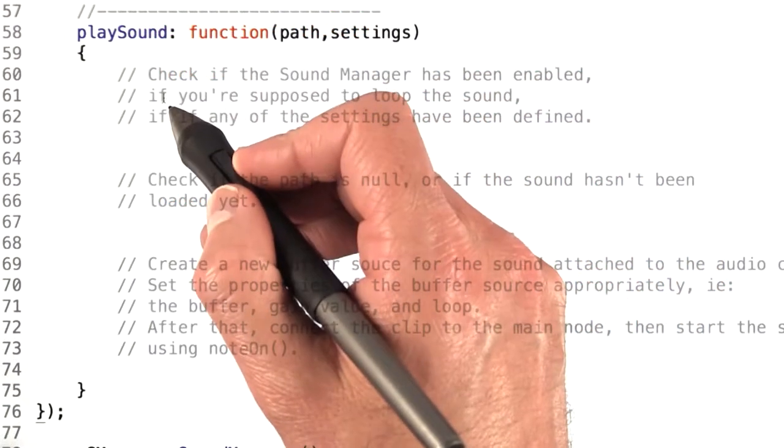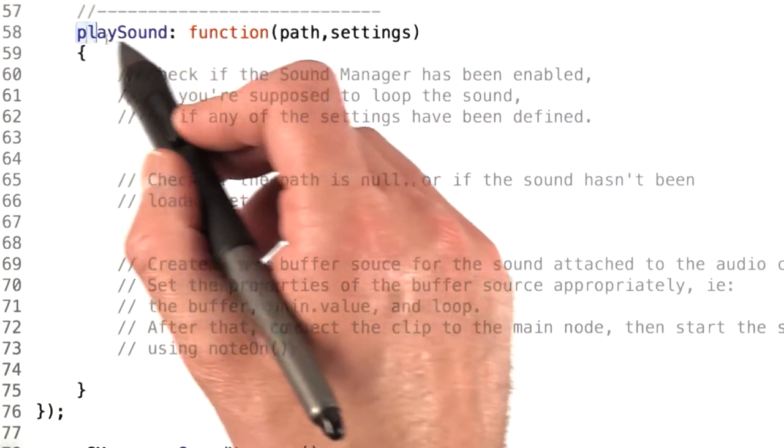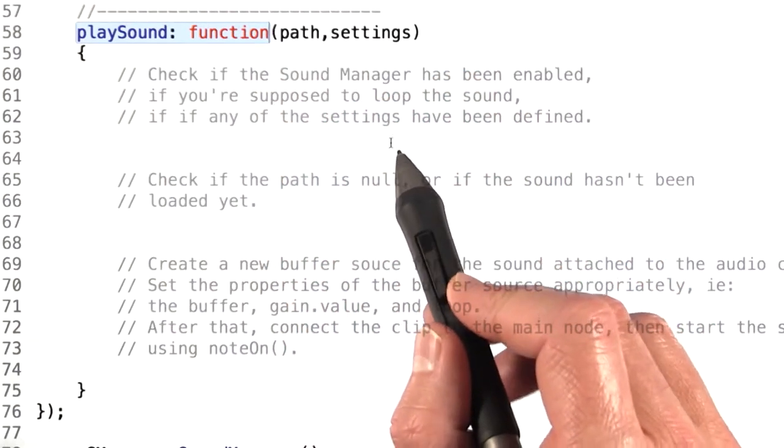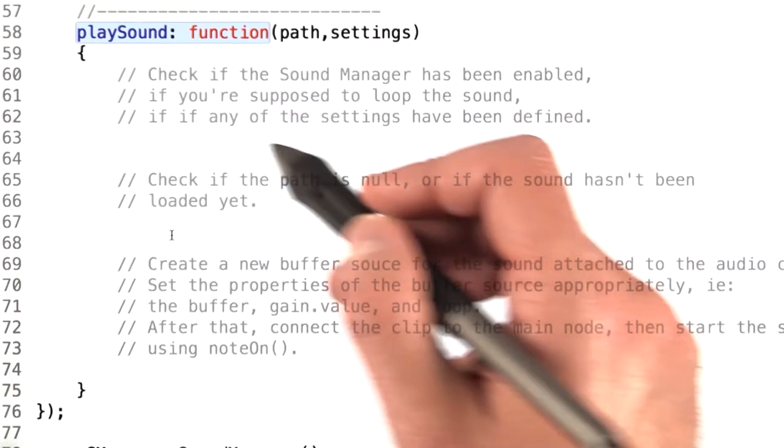Let's take a look at our skeleton code for this. We have a play sound method that takes a path to the sound effect that you want to play, as well as an object containing all the settings.